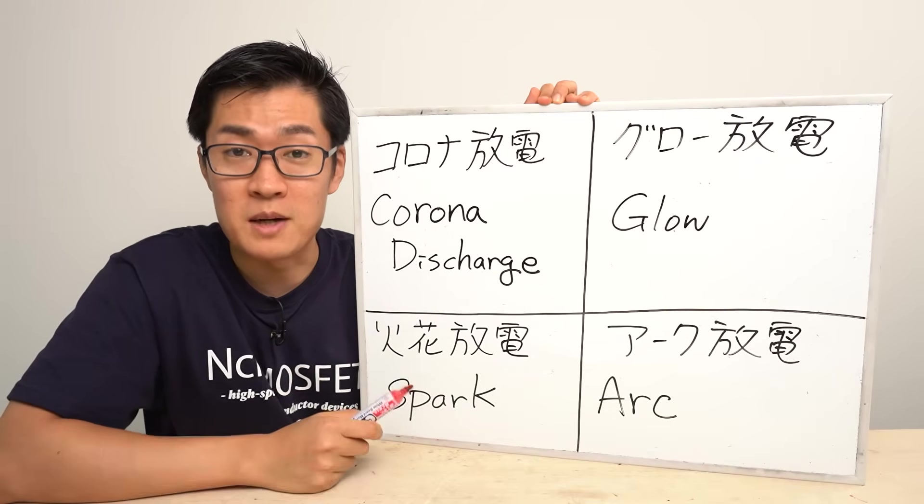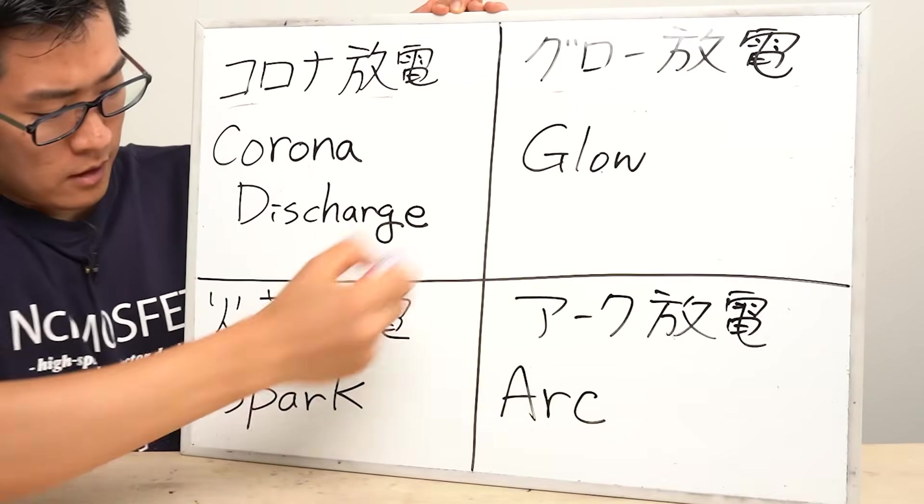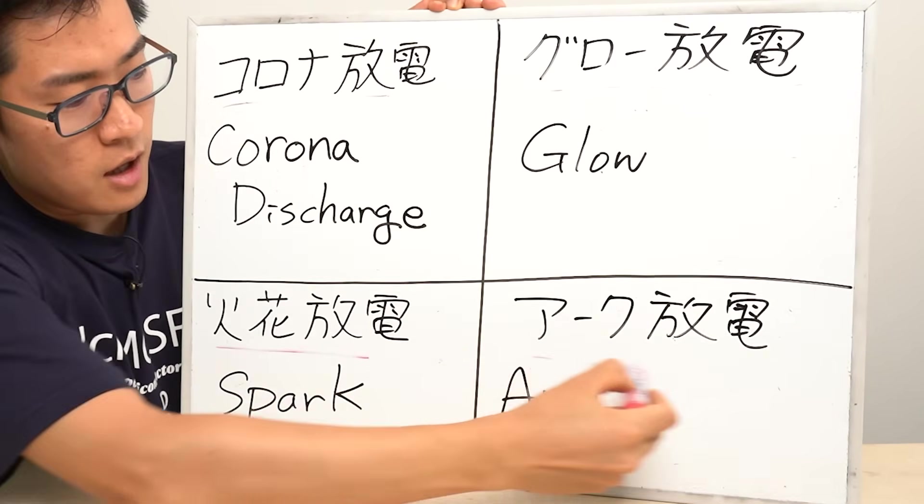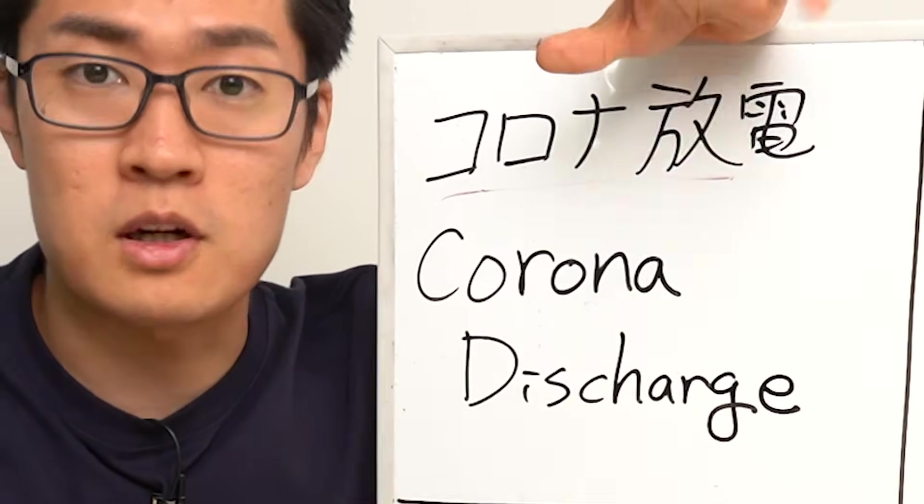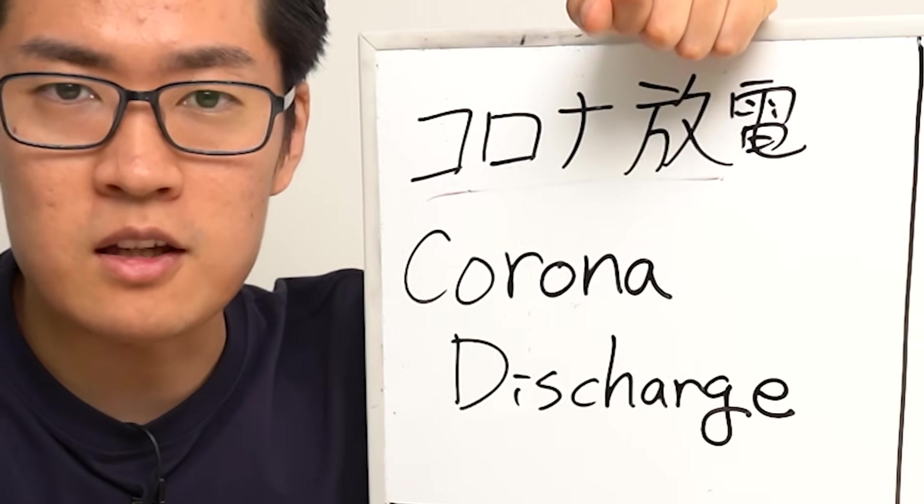Discharge has four main types: corona discharge, glow discharge, spark discharge, and arc discharge. Let's start with corona discharge. It's a discharge that occurs for example at the tip of a wire or pointed areas. It's a continuous discharge.